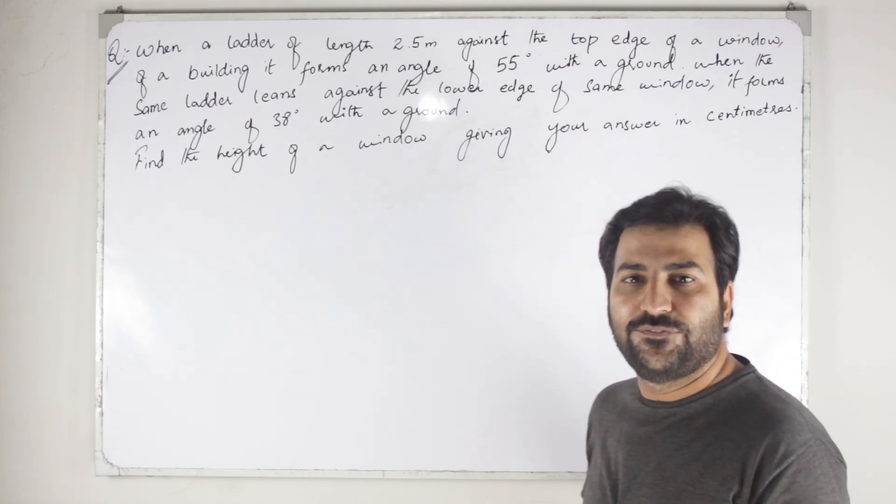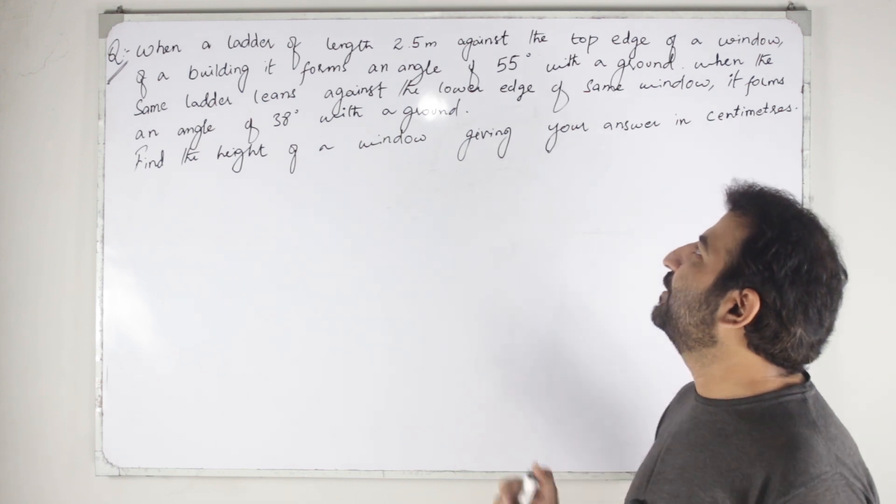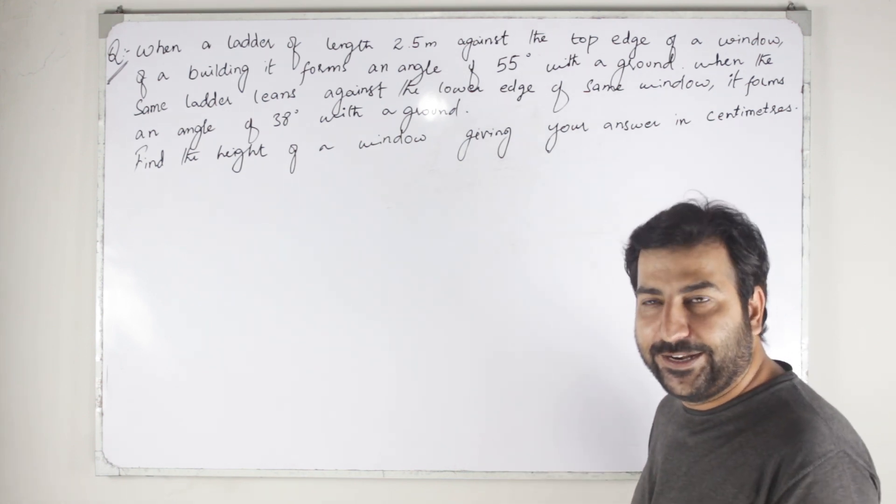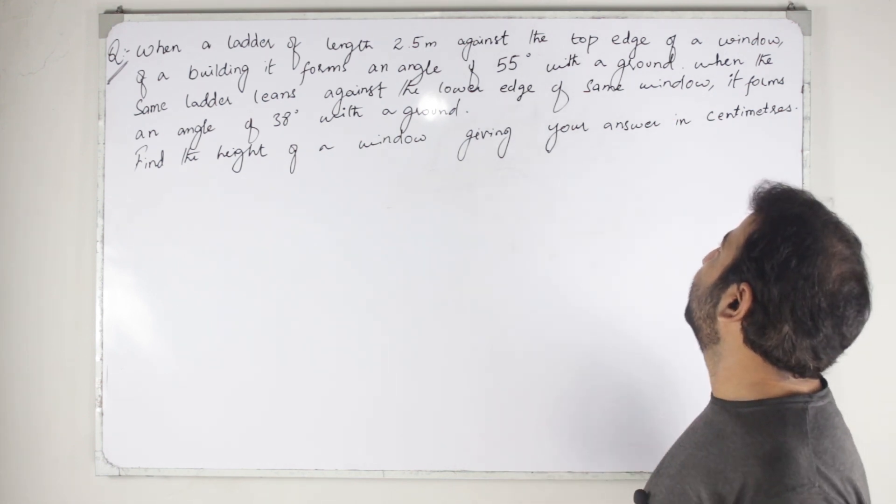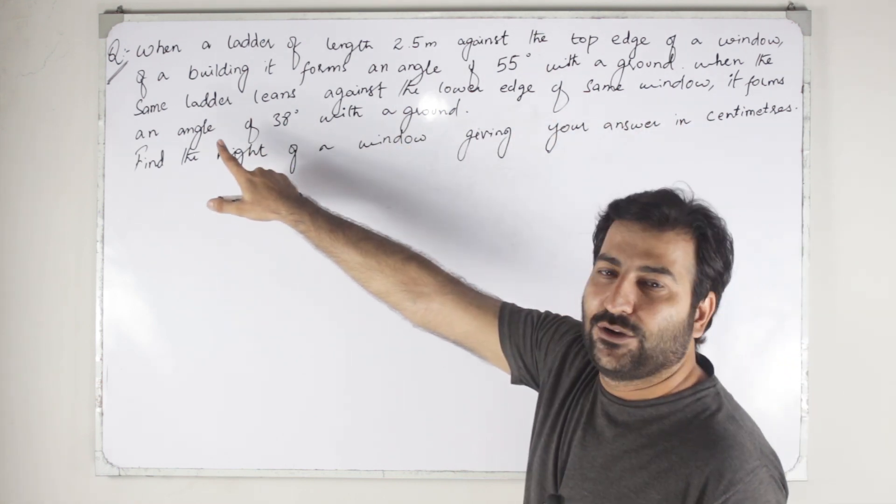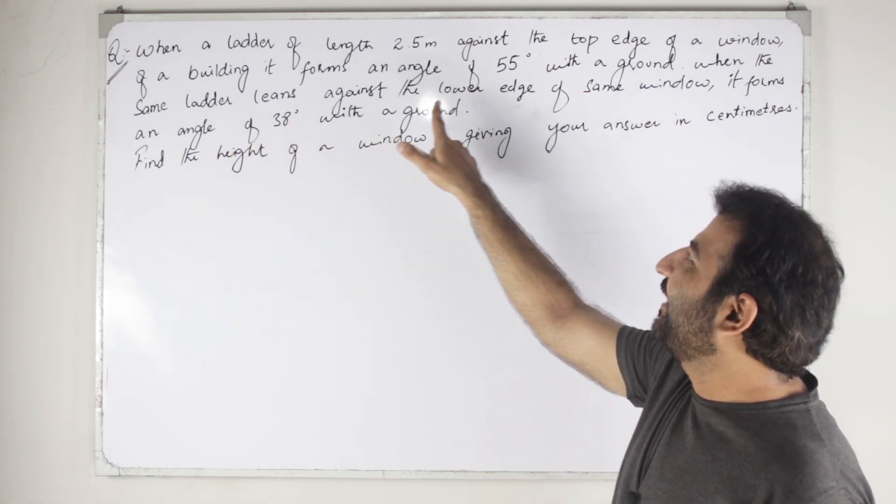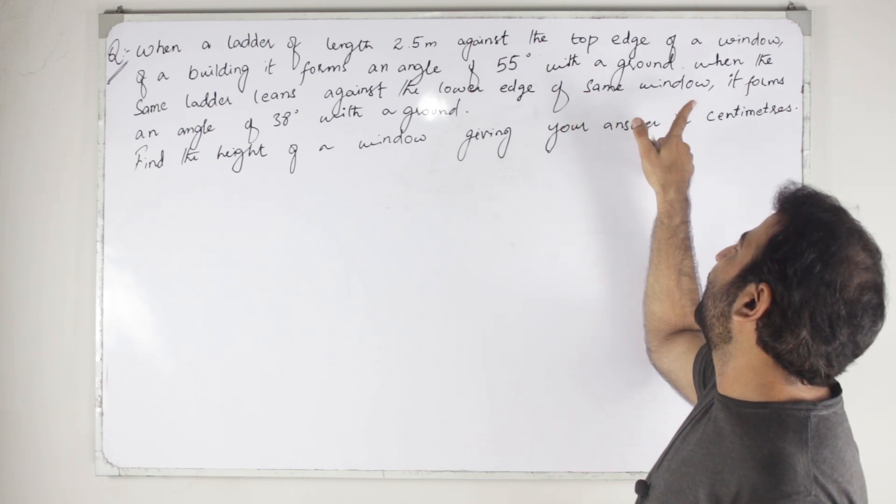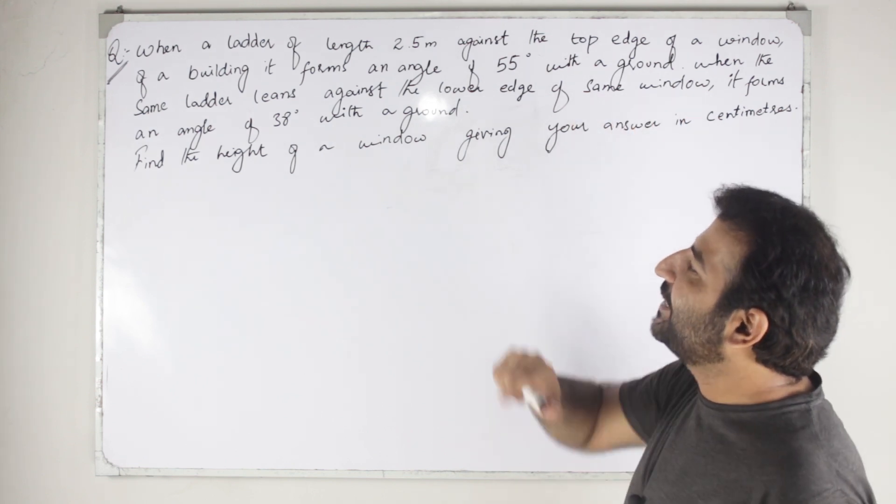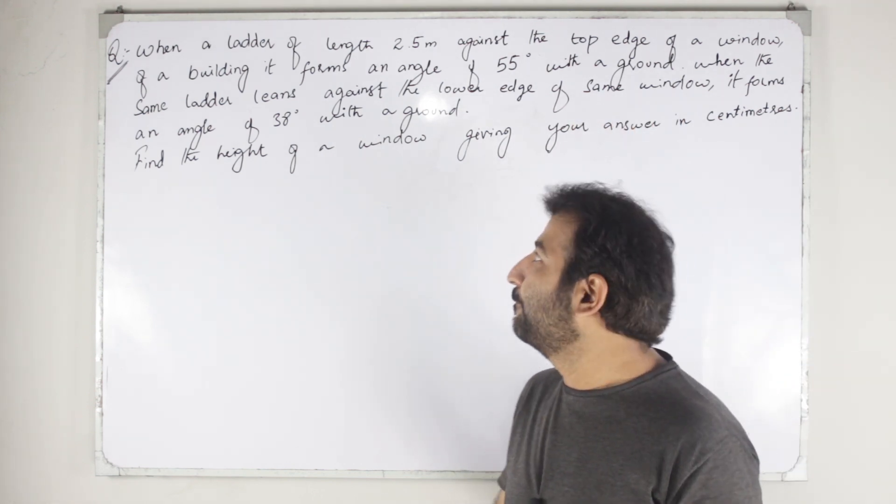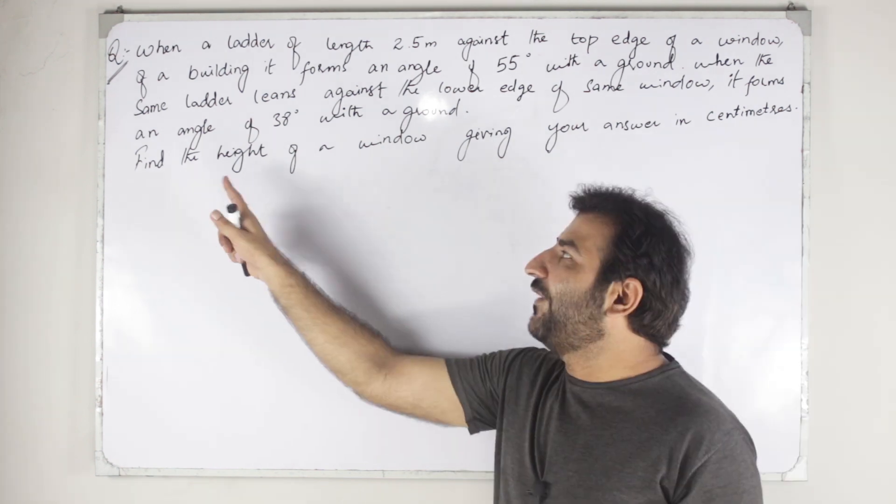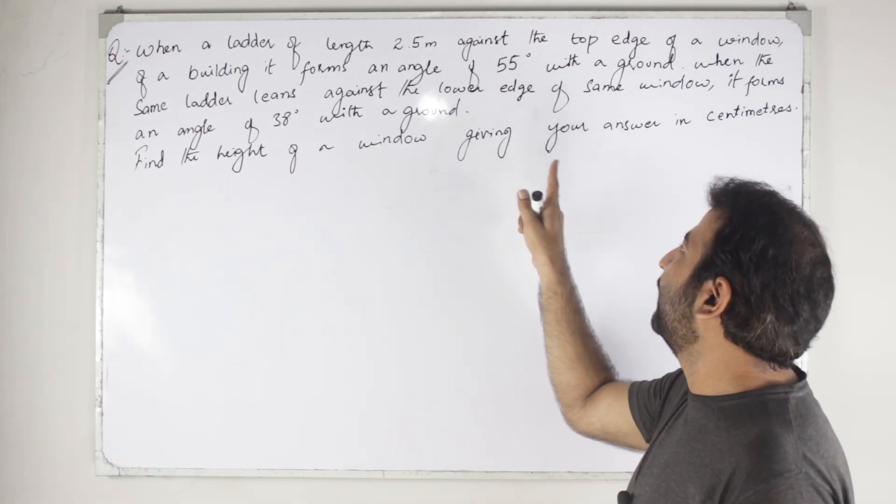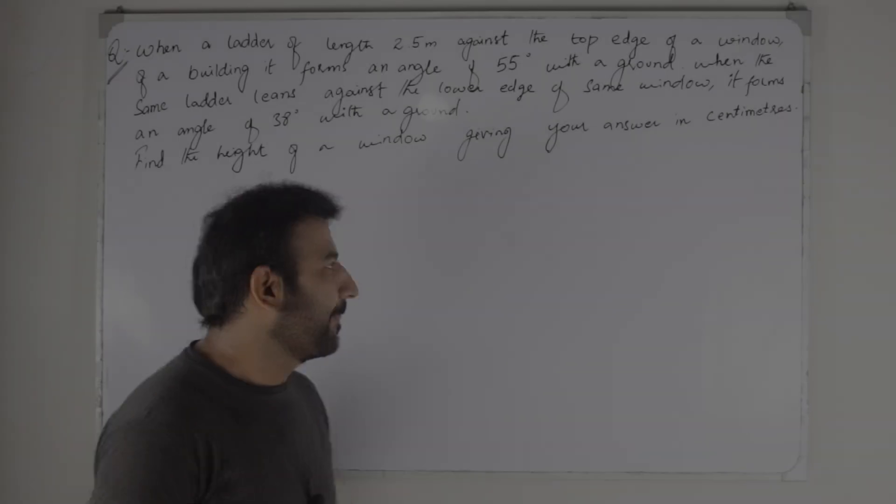...it forms an angle of 55 degrees with the ground. When the same ladder leans against the lower edge of same window, it forms an angle of 38 degrees with the ground. Find the height of a window, giving your answer in centimeters.